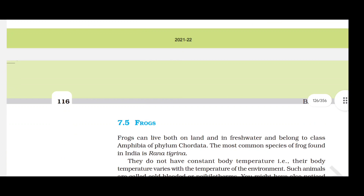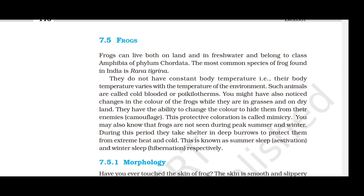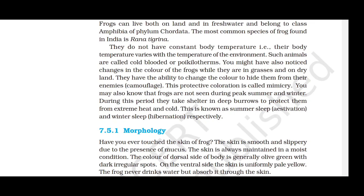Frogs can live both on land and in fresh water and belong to class Amphibia of phylum Chordata. The most common species found in India is Rana tigrina. They do not have a constant body temperature — their body temperature varies with the environment — and such animals are called cold-blooded or poikilotherms. Frogs can change color to hide from enemies, a phenomenon called mimicry. During peak summer they undergo estivation and during winter they undergo hibernation, taking shelter in deep burrows.